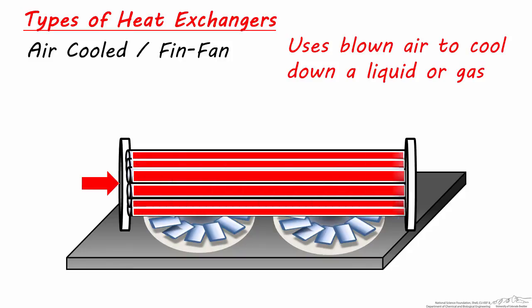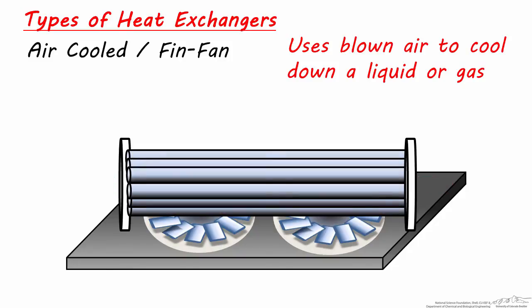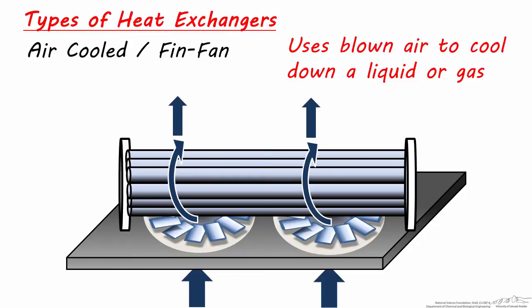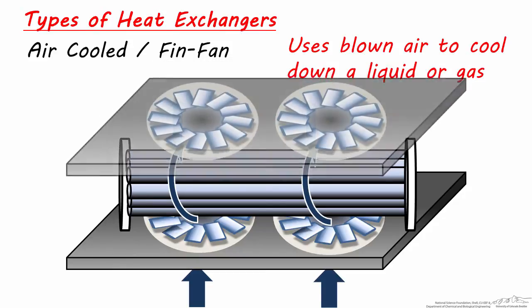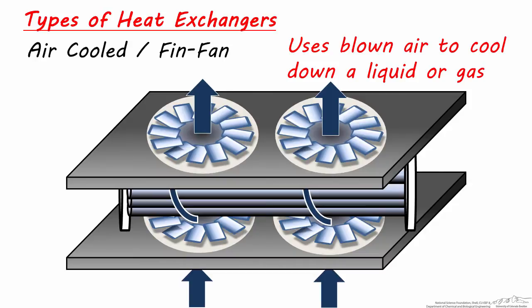Hot fluid flows into and out of the tube bundle, while the outside of the tubes are cooled by air convection using the fan below and usually one above it as well. The fans below blow air up, while the fans above draw air from below. For an air-cooled heat exchanger, hot fluid always travels tube side through the tube bundle because air is always the cooling medium.